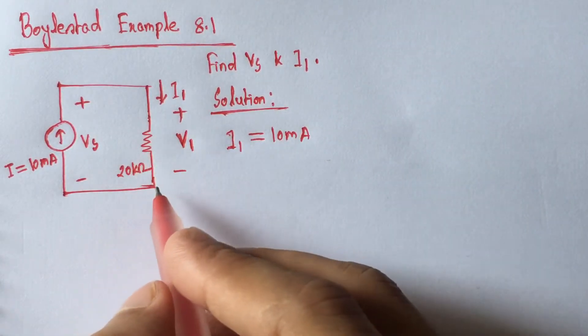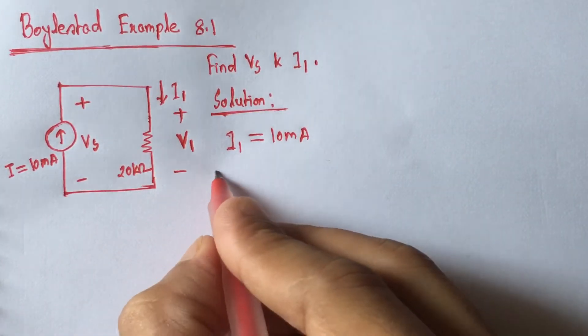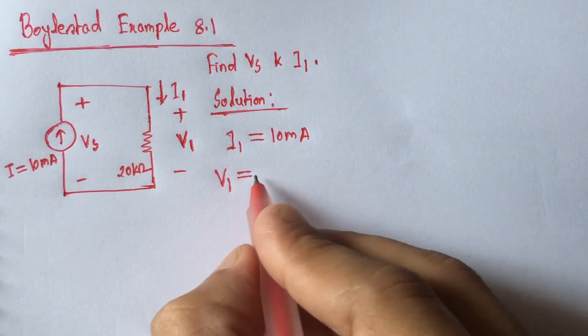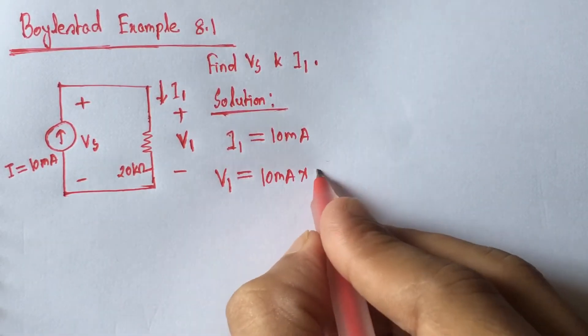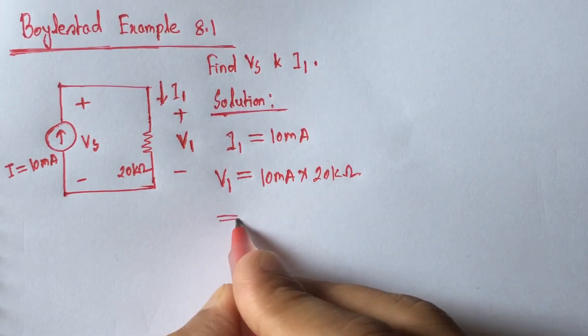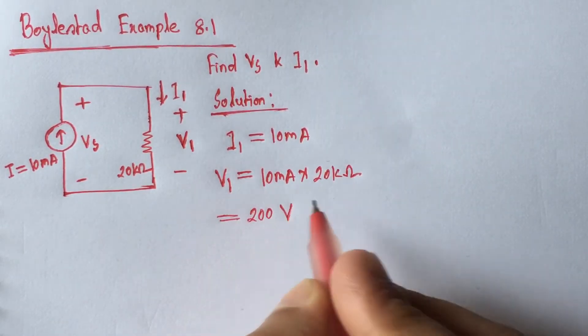Now by using Ohm's law we will get V1. V1 is equal to 10 mA multiplied by the resistance 20 kohm. This is 200 volts.